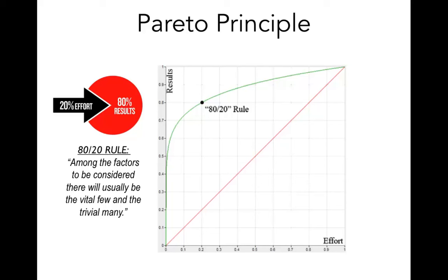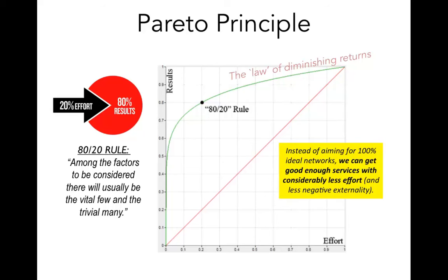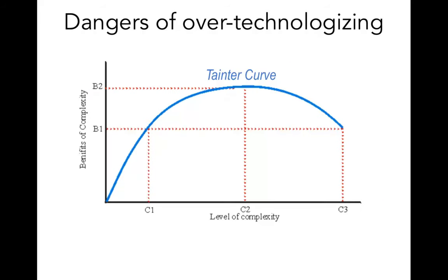The general idea is that we should be optimizing for the vital few, and it also highlights the law of diminishing returns. This is important for our concept of approximation — we don't need ideal services because even if we strive for an ideal networking service we'll face diminishing returns beyond a certain threshold. The take-home message is that instead of aiming for 100% ideal networks with very high throughputs and very low latencies, we should focus on good enough services, achievable with considerably less effort and less negative externality.